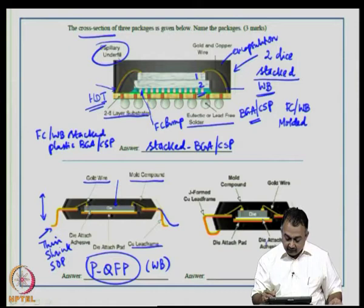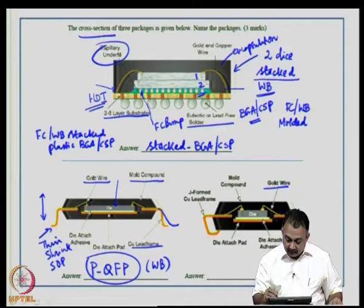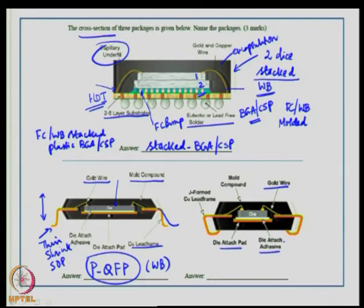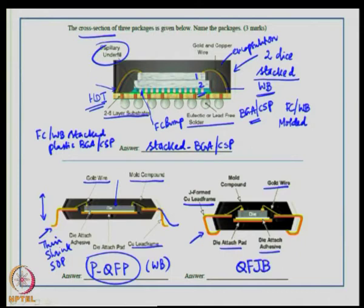The second figure at the bottom shows a very similar configuration — wire bond, molding compound, die attach pad and adhesive — but the difference is that the lead frame is a J-formed copper lead frame. So this could be a quad flat J-bended lead (QFJ). This is how you identify a package type from its cross-section.